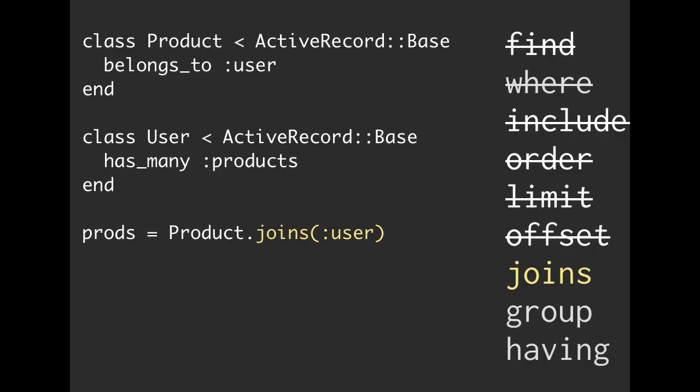Hello everyone, Richard Schneeman here. We're at Steams on Twitter and GitHub. Today we are going to be using joins inside of ActiveRecord. This is going to be one of the longer methods that we're going to be taking a look at, and we're actually going to split it up into two parts: inner joins and outer joins. So let's go ahead and get started.